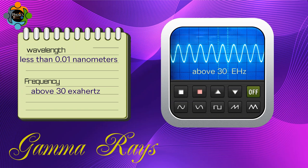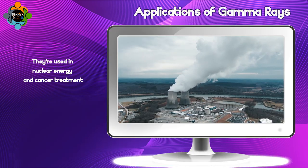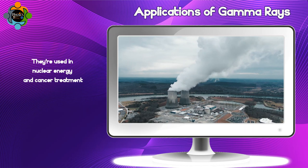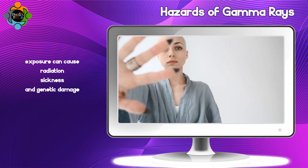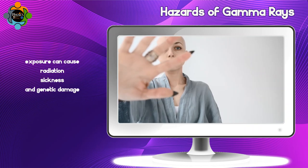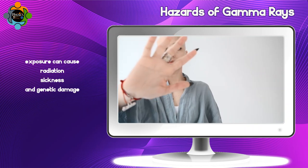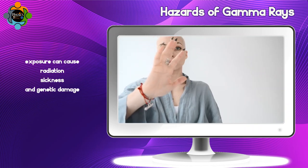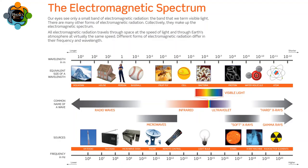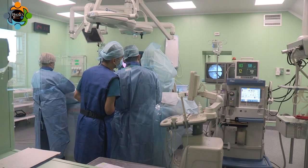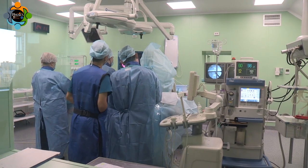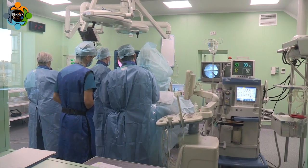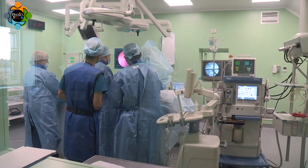Finally, gamma rays have the shortest wavelength — less than 0.01 nanometers — and the highest frequency, above 30 exahertz. They are used in nuclear energy and cancer treatment, but exposure can cause radiation sickness and genetic damage.